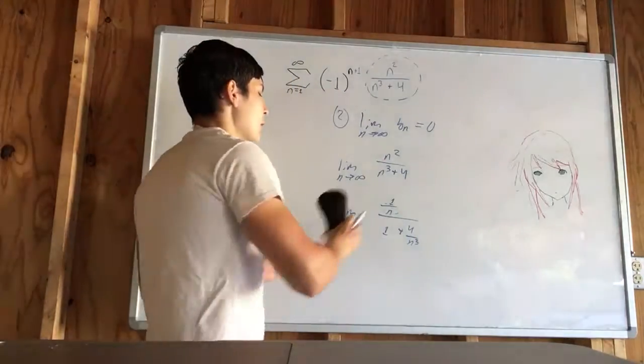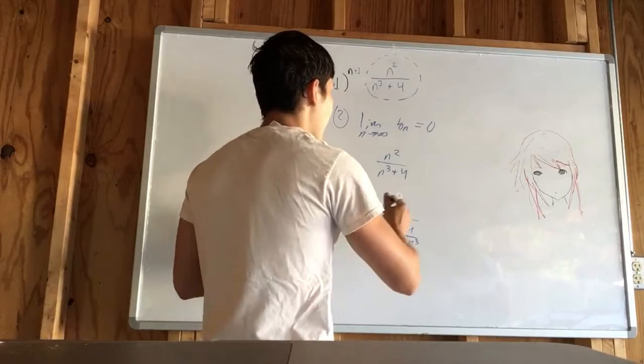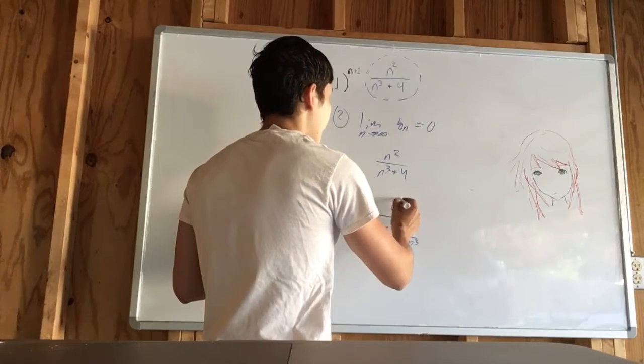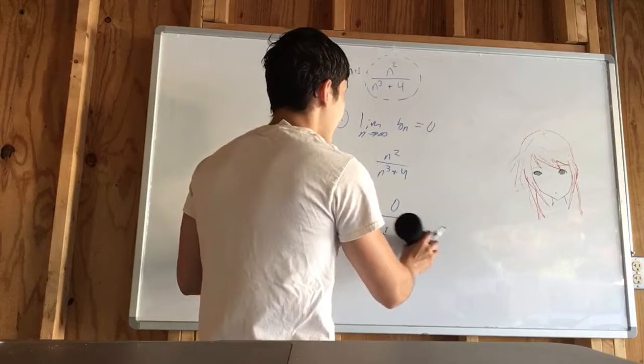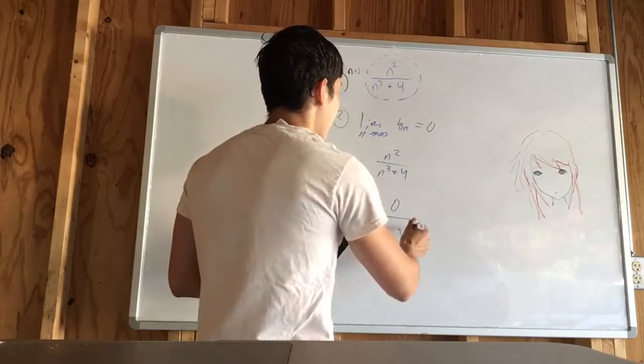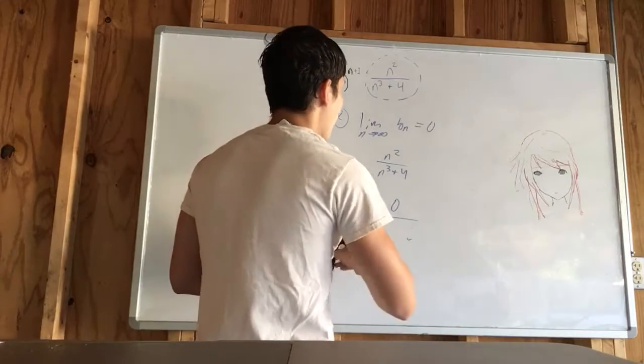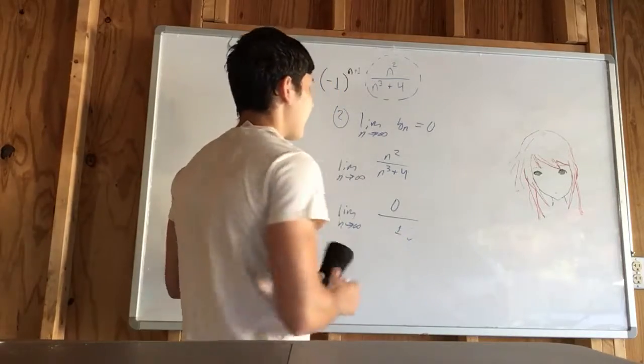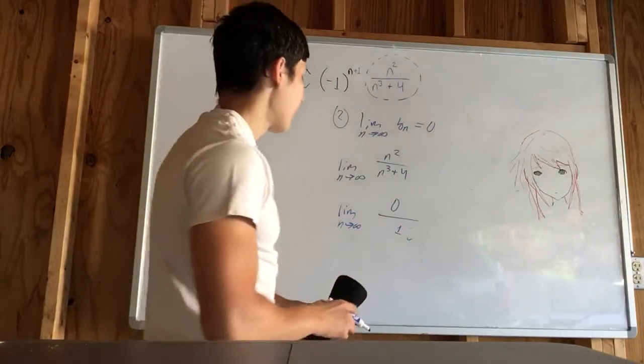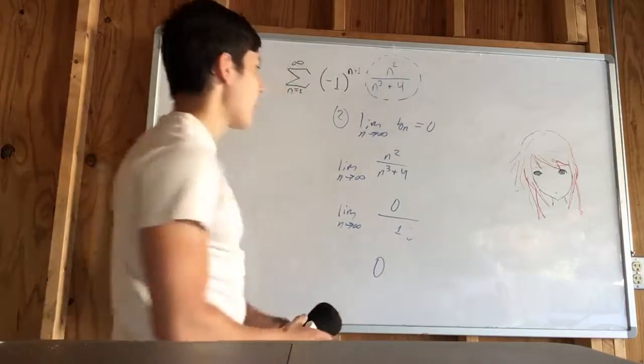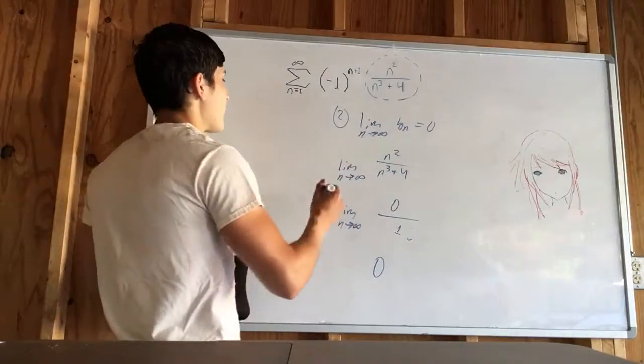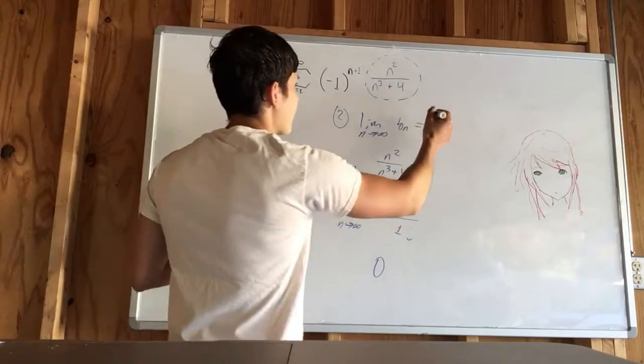We plug in infinity. This goes to 0, because we're dividing 1 by an infinite amount. So, it's 0. 4 divided by infinity is also 0. 1 plus 0 is 1, but 0 divided by anything is 0. So, this is 0. So, it passes our second test also, which means that this converges.